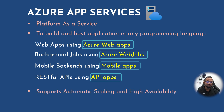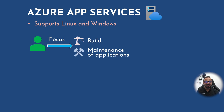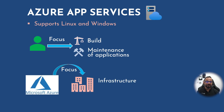Azure App Service also supports automatic scaling and high availability. Some more features include support for both Linux and Windows operating systems, so that the user can focus only on the build and maintenance of their application. Microsoft will focus on maintaining your infrastructure and making sure that your environment is healthy all the time.